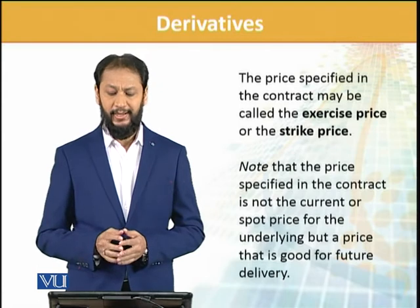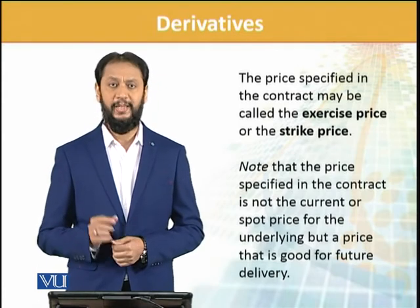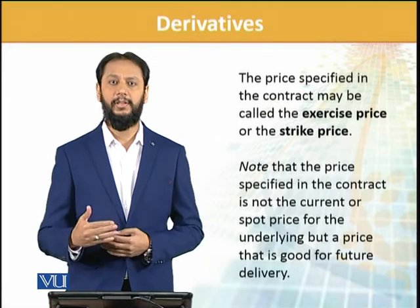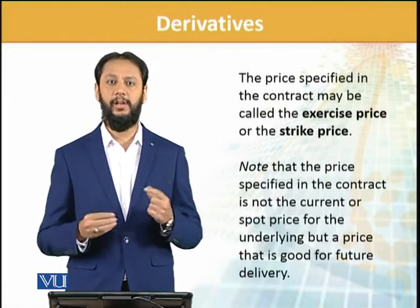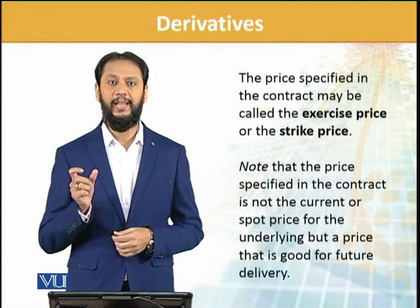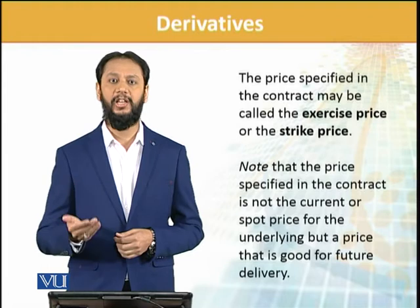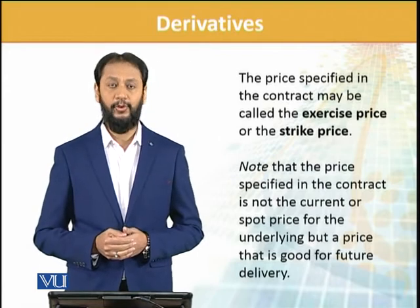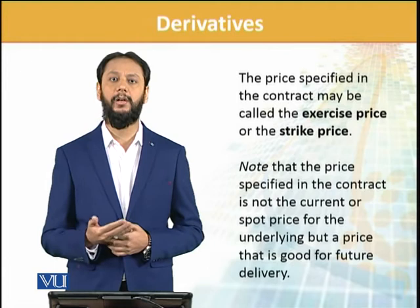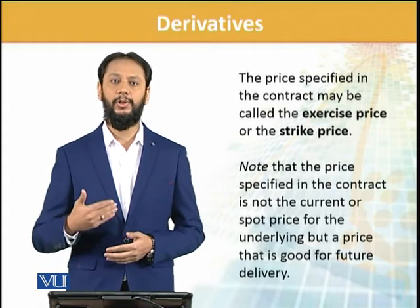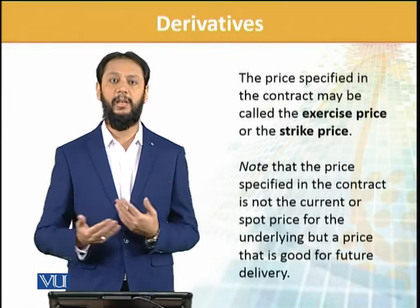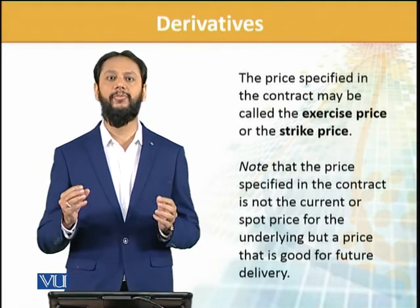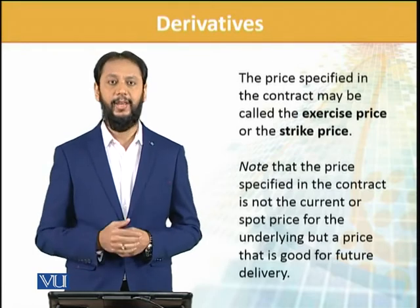The price specified in the contract may be called the exercise price or strike price. These are important terms. If we enter a contract today and it is a three-month or one-month contract, then the settlement after that period will happen at a certain price — that is what we normally call the exercise price or strike price. Note: the price specified in the contract is not the current or spot price for the underlying, but a price that is agreed for future delivery. A product has a current market rate, but the price noted in the derivative is what we think the value can be at the time of settlement. There will be actual variation, but at the time of contract, the price negotiated and finalized between the parties — that is the exercise price.